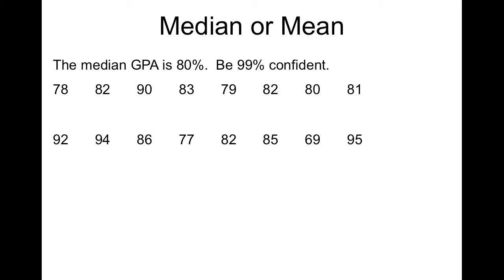So starting off the same way, you're going to be looking at your null and alternate, and I have M this time, since we're talking about median. So I have M equals 80%, and the alternative is M is not equal to 80%. It doesn't say greater than or less than GPA, it just has a different than, so we're just going to be looking at not equal to.